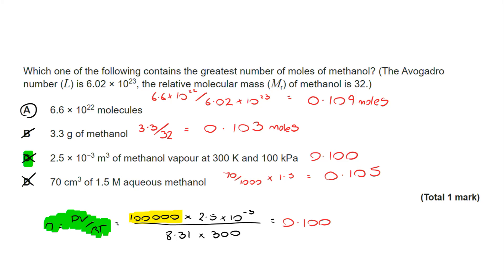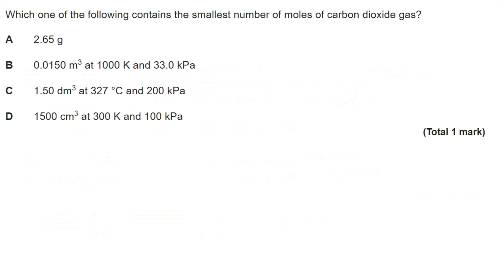Next question. And a very similar idea to what we saw on the last one. I will remind you that R, in the ideal gas equation, is 8.31, and that would always be provided within the exam. But let's go through and see what we can find out. This time it's the smallest number of moles of carbon dioxide gas.